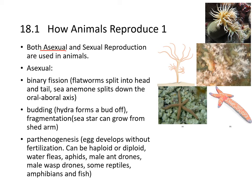Animals use both asexual and sexual reproduction. Asexual methods include binary fission, flatworms splitting into head and tail where both develop into full adults, sea anemones splitting down the oral-aboral axis, budding in hydra where the hydra buds off from the parent, and sea stars regenerating from fragmentation.